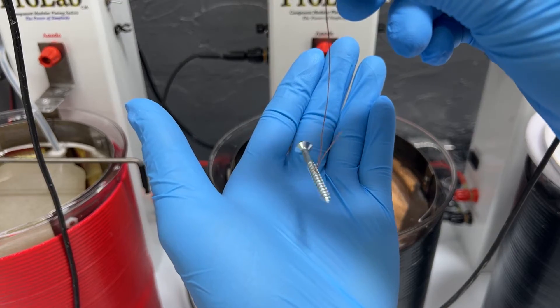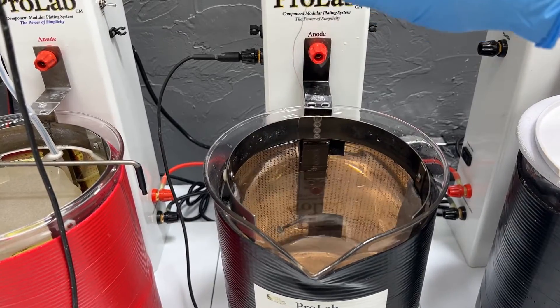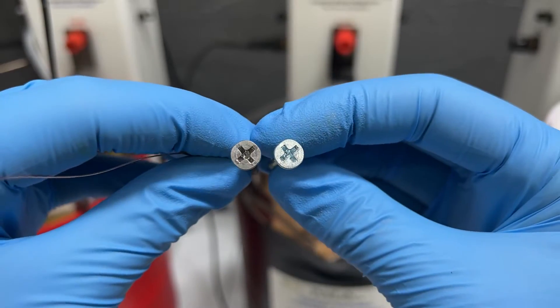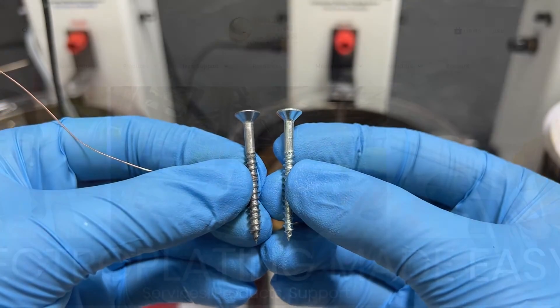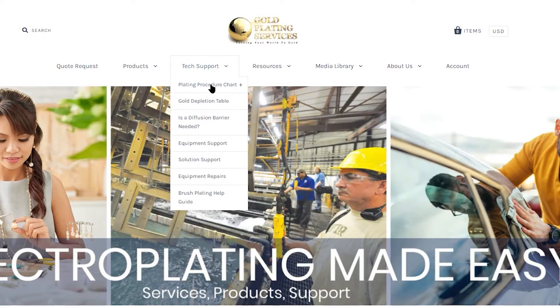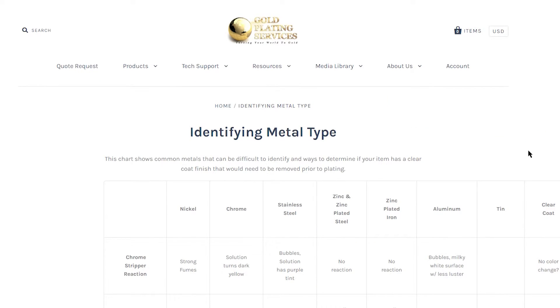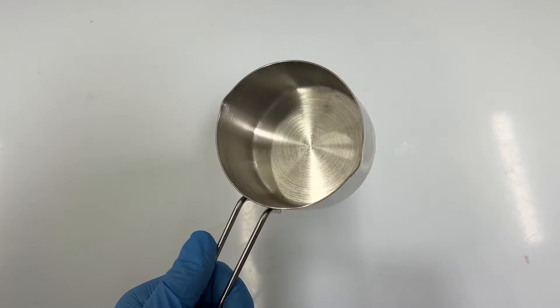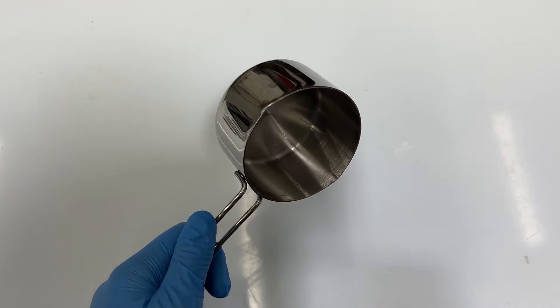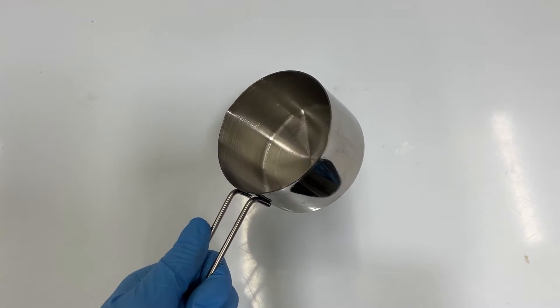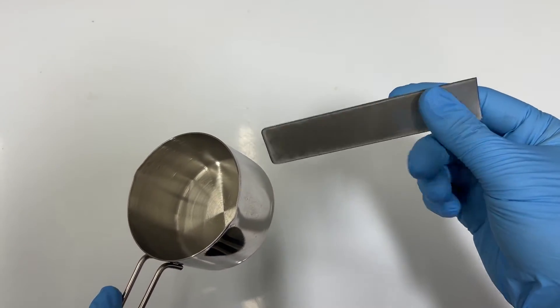However, sometimes it's not possible to know these things ahead of time, and if that's the case, then experimentation will be necessary. Our guide to help identify metal types, which is located under the tech support tab on our website, may be useful. If you don't have a clear understanding of what your items are made of, then it's important to have an extra piece that can be used to practice on.